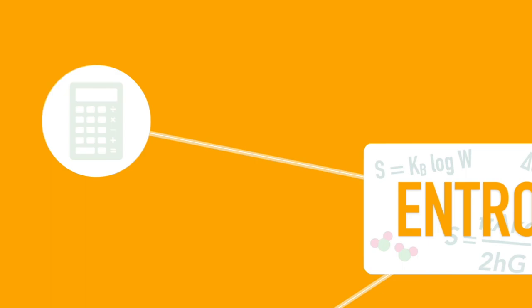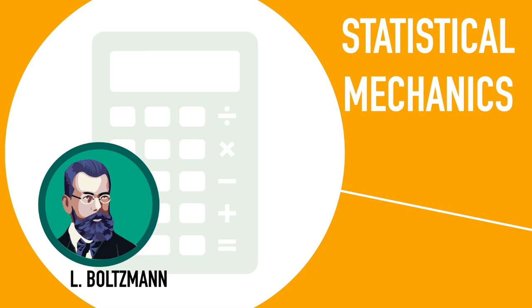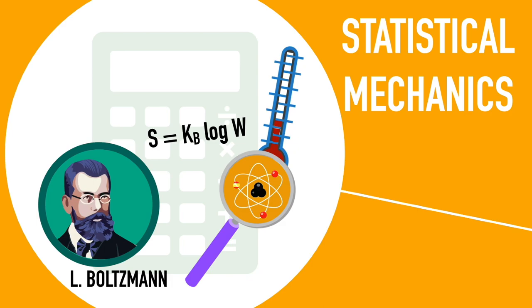The statistical meaning of entropy and its relation with the idea of disorder was first introduced in statistical mechanics by Ludwig Boltzmann in the late 19th century. Boltzmann was one of the first physicists to recognize the connection between macroscopic properties like temperature or pressure and the behavior of atoms and molecules. Boltzmann figured out that entropy measures how many times we can rearrange molecules in a system to describe the same macroscopic state.